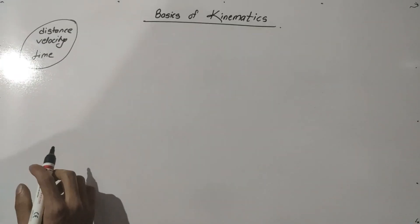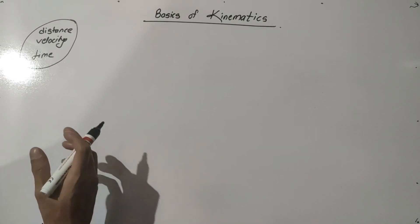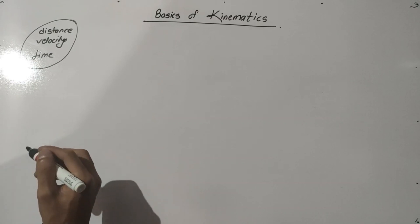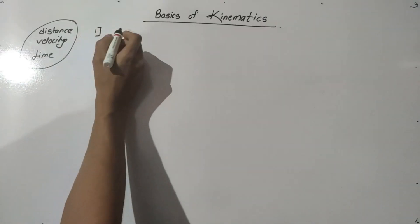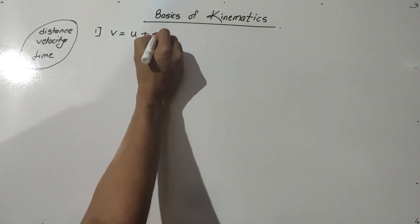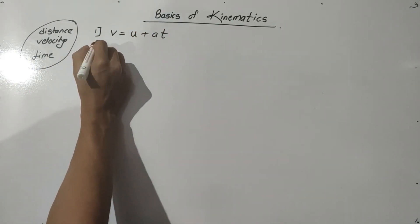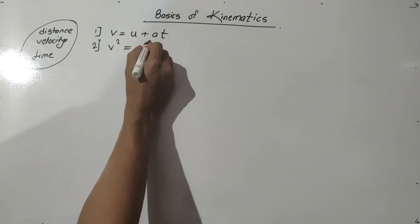Before directly starting these problems, we will discuss some basics - the three basic formulas of kinematics. They are: V equals U plus AT, second one is V square equals U square plus twice of AS.